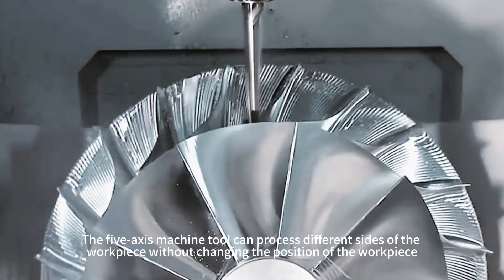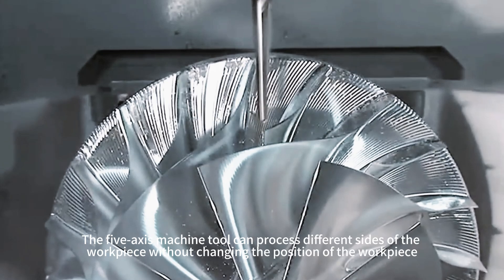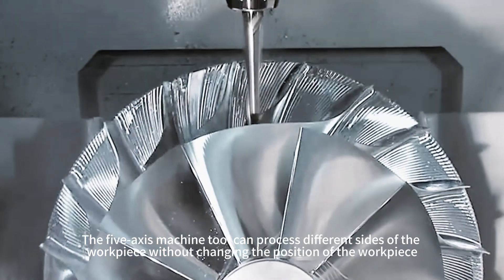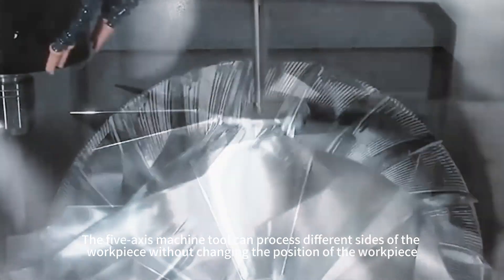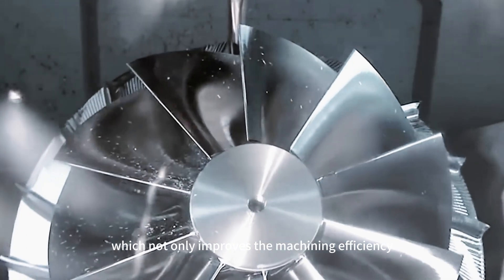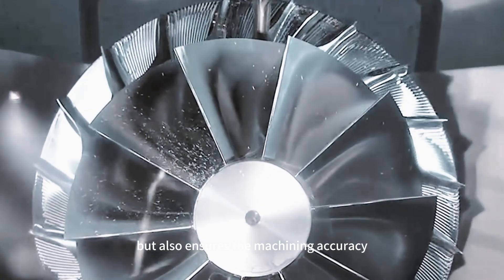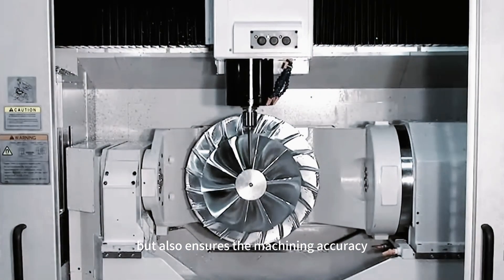The 5-axis machine tool can process different sides of the workpiece without changing the position of the workpiece, which not only improves the machining efficiency, but also ensures the machining accuracy.